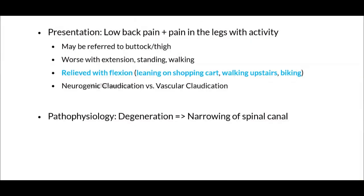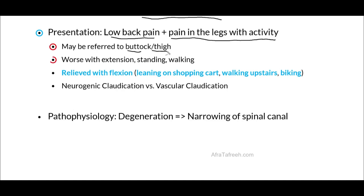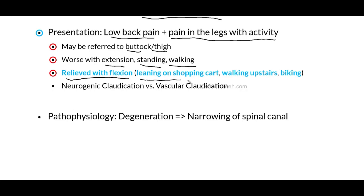This must be contrasted with neurogenic claudication, also known as spinal stenosis. In spinal stenosis, the classic patient presents with low back pain as well as pain in the legs with activity, much like vascular claudication. This pain may be referred to the buttock or thigh, and is worsened with extension, standing, or walking. However, the key distinction is that in neurogenic claudication, symptoms are relieved with flexion. Activities producing this relief include leaning on a shopping cart, walking upstairs, and biking — all involving a forward-leaning position. This distinction is extremely important to keep in mind for examination purposes.